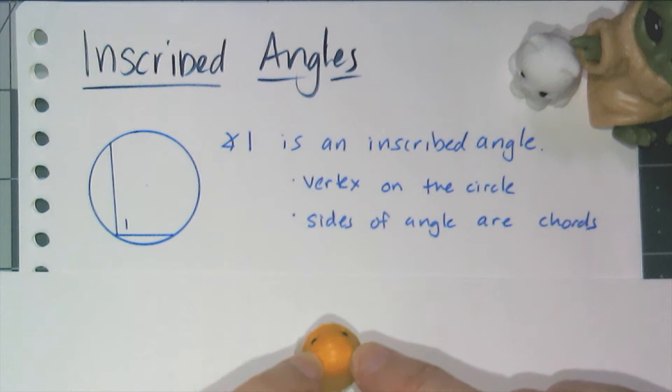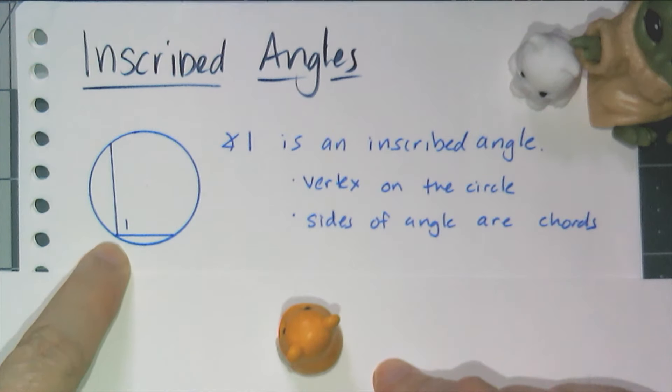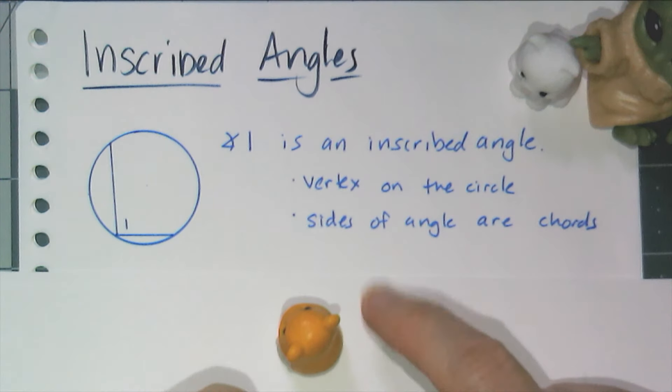Hey y'all, in this video we're going to talk about inscribed angles. So first let's do a quick refresher of what an inscribed angle is. It is an angle drawn so that a vertex is on a circle, and the sides of the angle are chords of that circle.